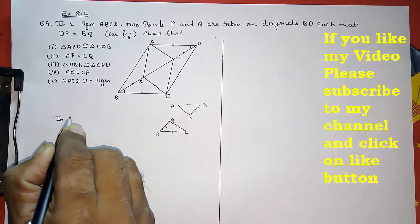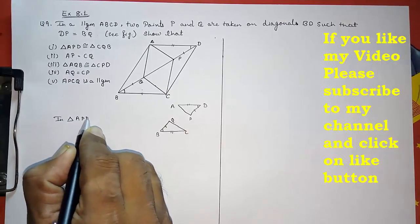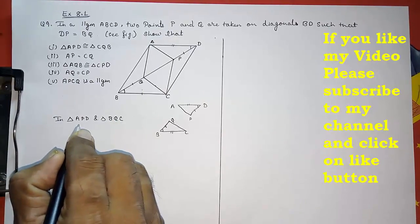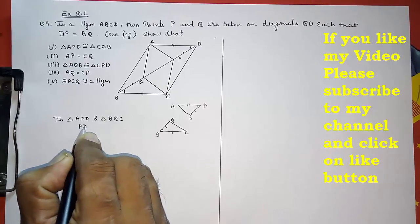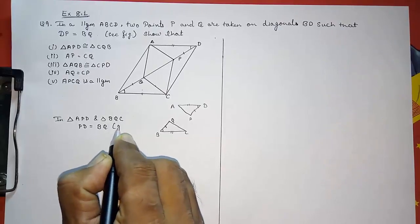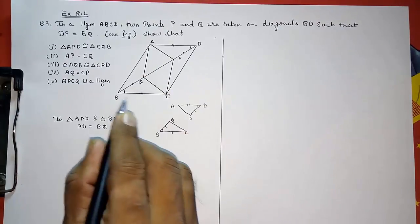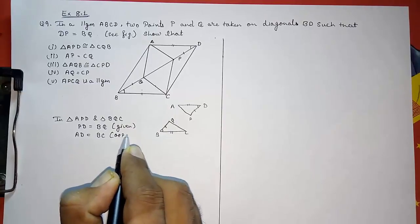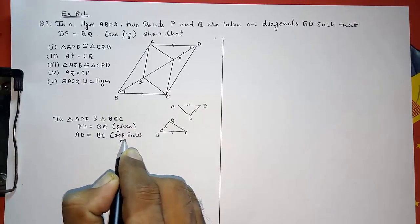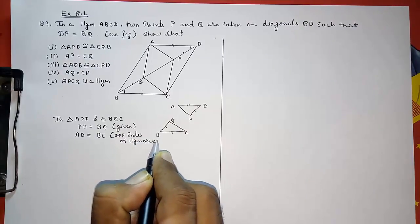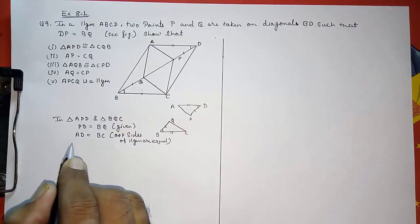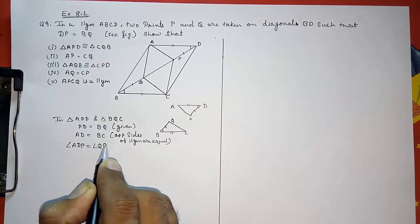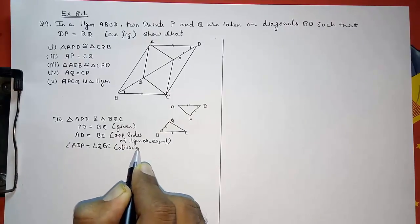In triangle APD and triangle BQC: first, PD is equal to BQ — given. Second, AD equals BC — opposite sides of a parallelogram are equal. Third, angle ADP equals angle QBC — alternate interior angles.